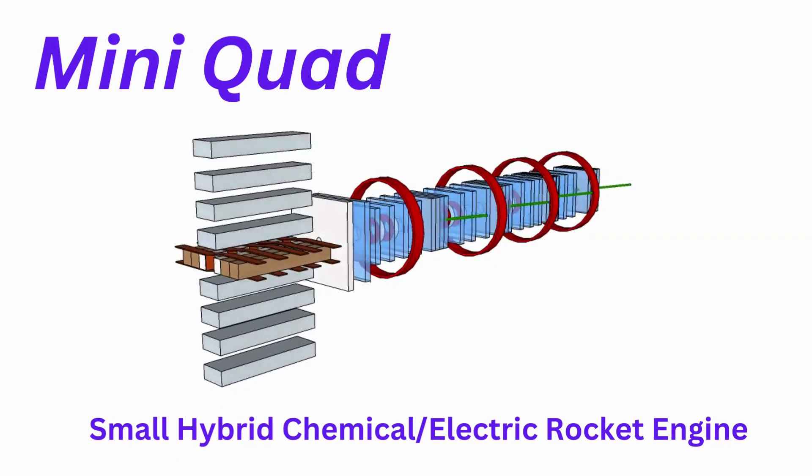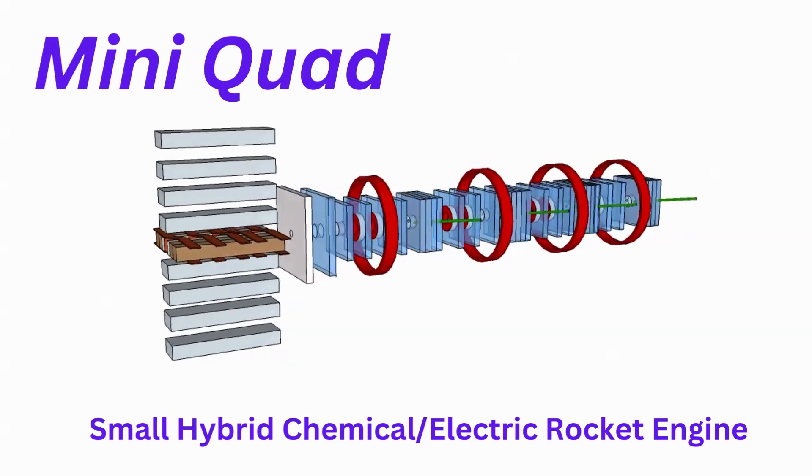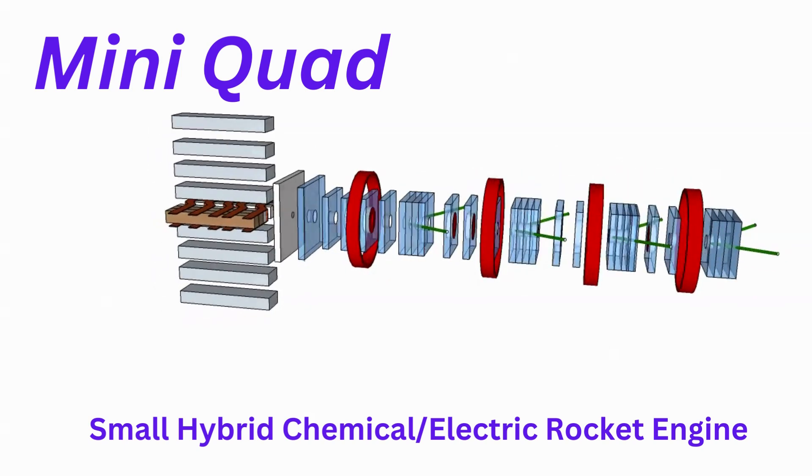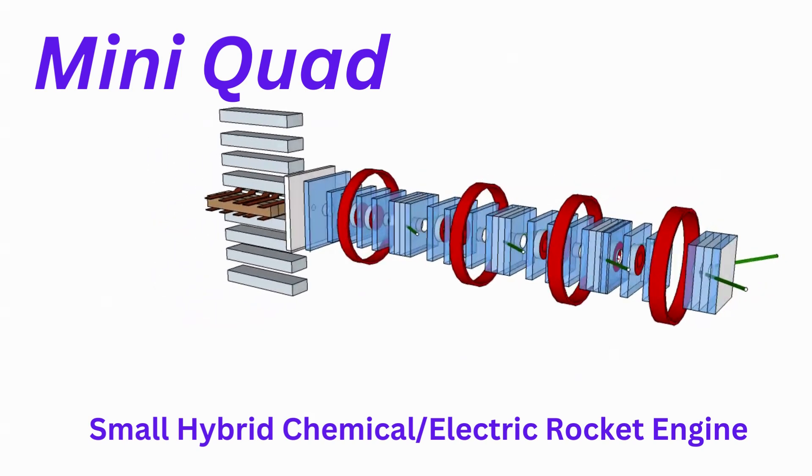This is the MiniQuad test rocket engine. It's only 14 inches long. It's a tool for getting several different engine components to work together.